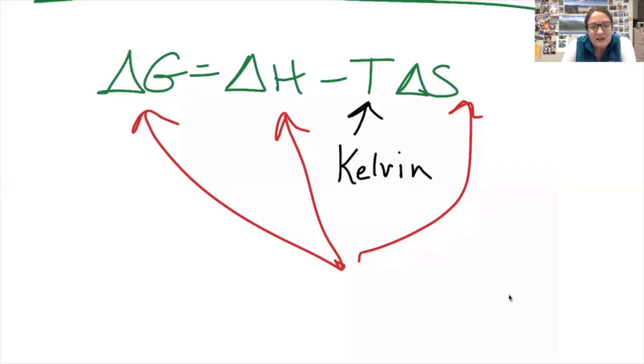Okay, this formula, delta G equals delta H minus T delta S, comes up in a couple of ways.